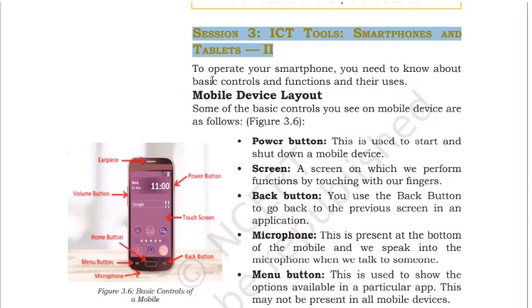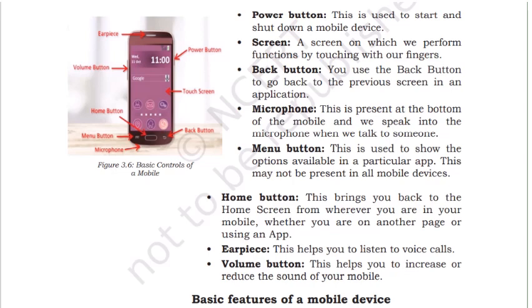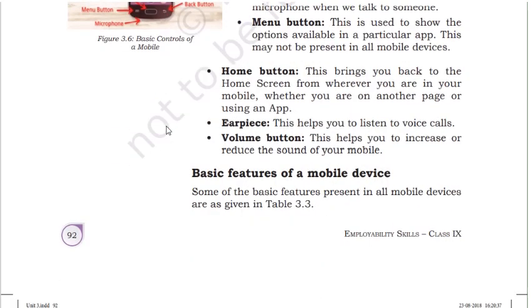The screen is where you perform functions by touching your fingers. The back button takes you to the previous screen. The microphone is at the bottom and helps record what you speak. The menu button shows all available options. The home button brings you back to the home screen. The earpiece helps you listen during voice calls. The volume buttons allow you to increase or decrease phone volume.